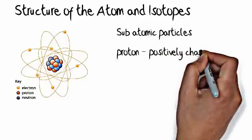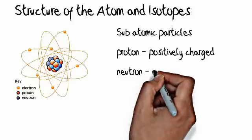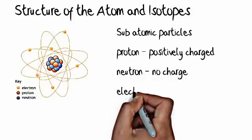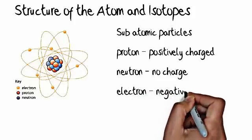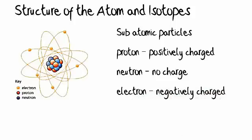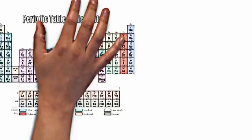Subatomic particles are the proton, which is positively charged, the neutron, which has no charge, and the electron, which is negatively charged. The proton and the neutron are in the nucleus, the electron is on the outside.